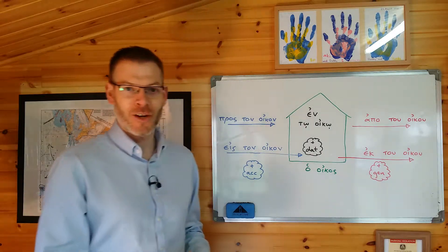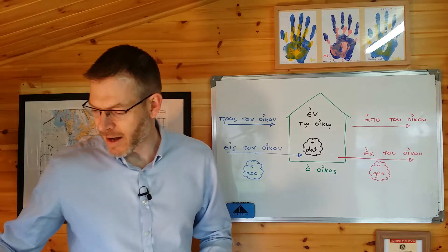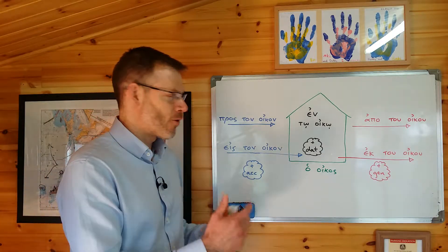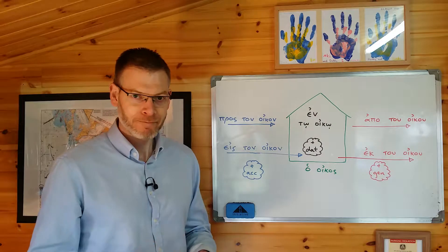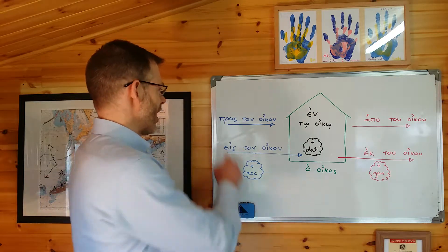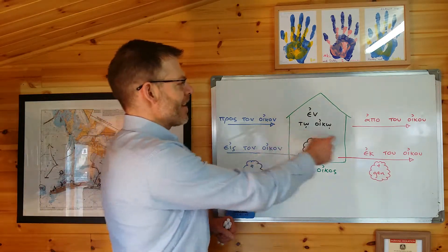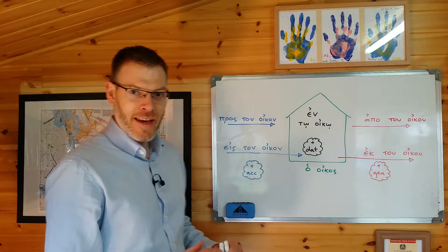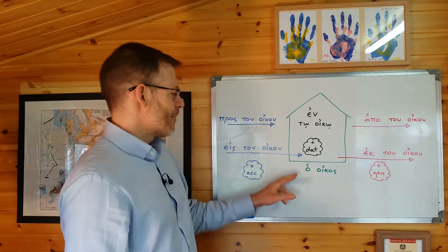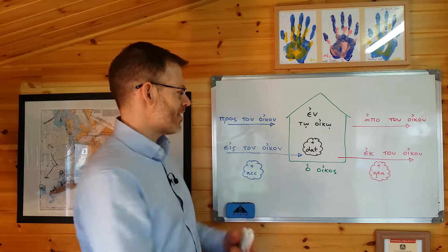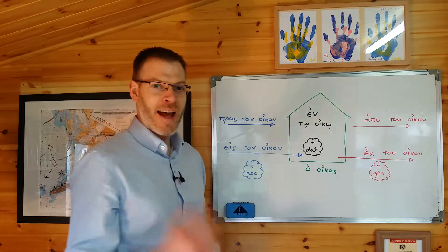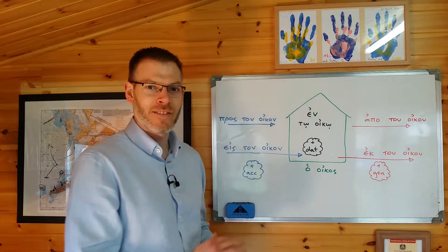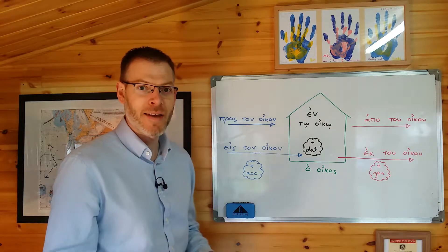Here are the five prepositions I want to talk about today. These are on a diagram adapted from page 44, with a bit more information from Duff's book. The prepositions are pros, eis, en, apo, and ek. To represent the meaning of the prepositions there's a house — ho oikos — and you can see the five prepositions are located on this diagram in places which represent their meaning.